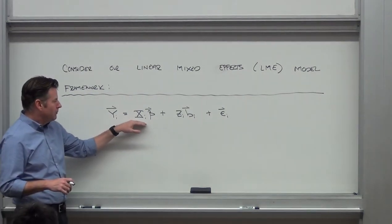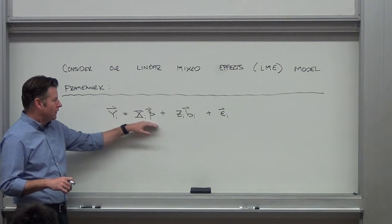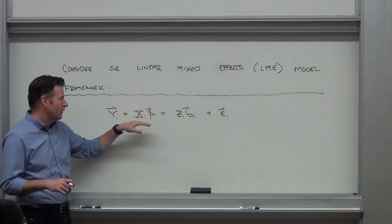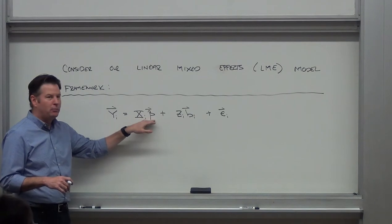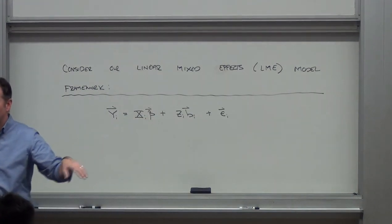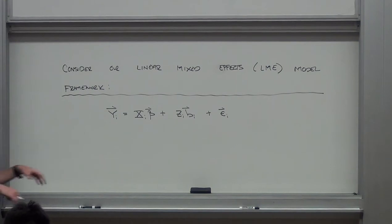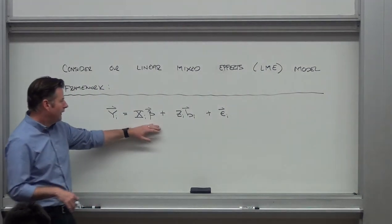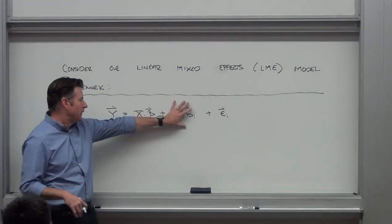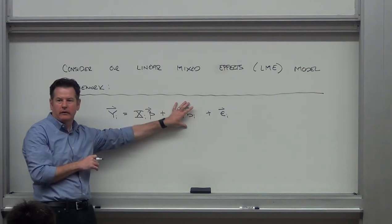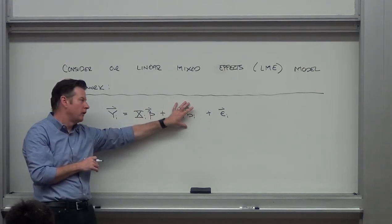I've got some design matrix for the fixed effects. We typically call these beta-marginal parameters — they're marginalized over any random effects, population-level parameters in the model. This is what we had been doing with GEE-type stuff, focusing on those marginal parameters.